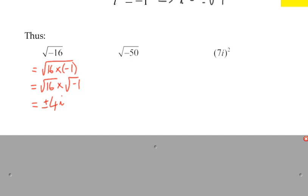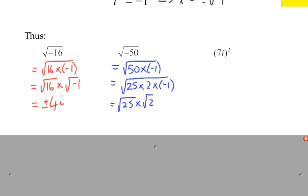The square root of negative 50 takes a little bit more working, only because 50 itself is not a perfect square. So we could think about it as 50 times negative 1. We could even expand that to say that it's 25 times 2 times negative 1. And two of those we can actually work out as values. Root 25 is 5. Root 2 we can't simplify. And the square root of negative 1 is i.